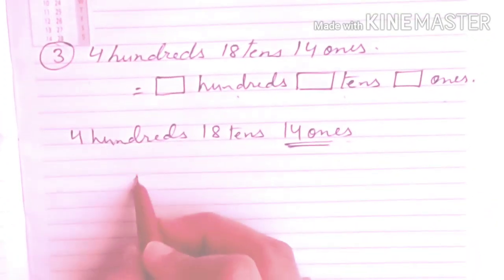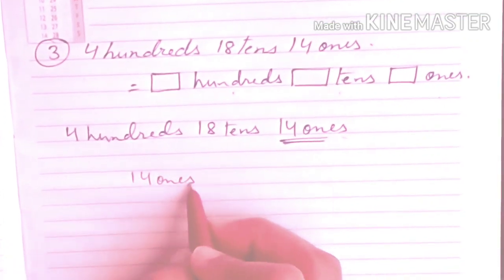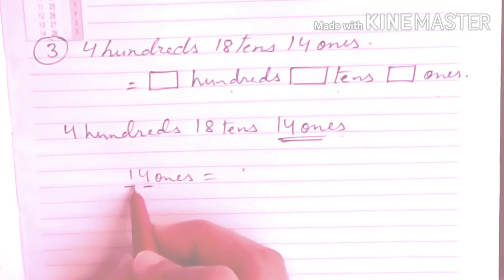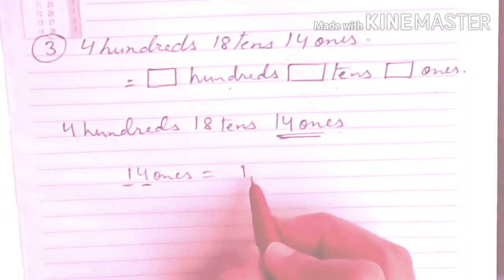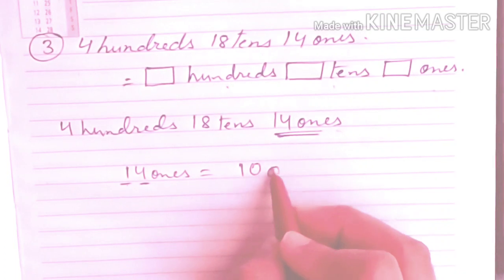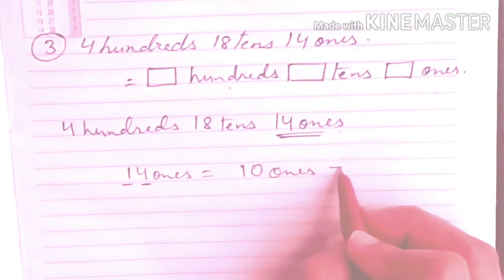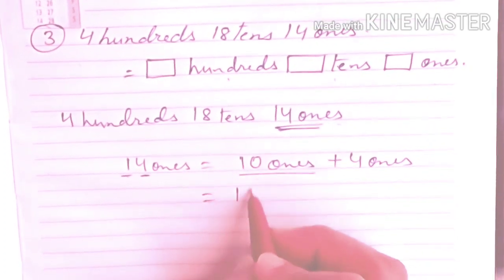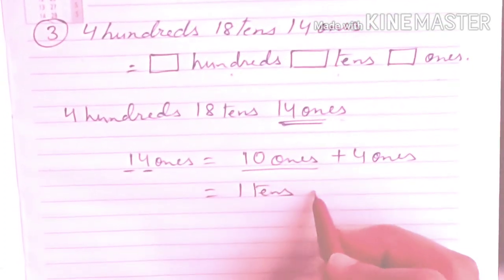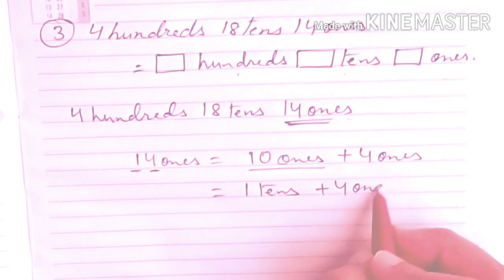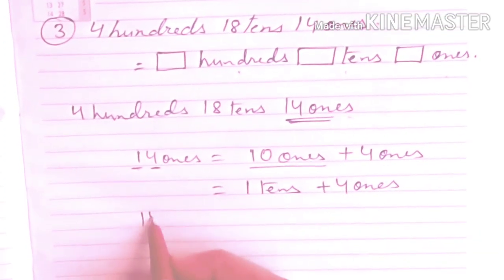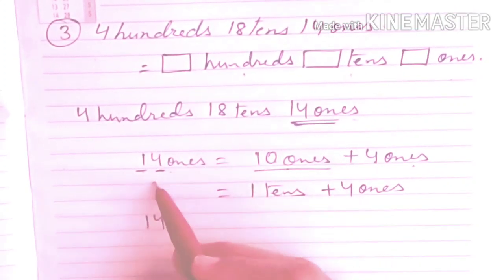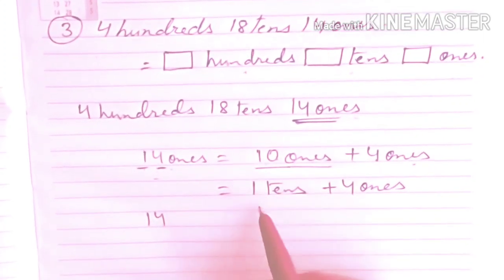14 ones. 14 ones is equals to? Here let's see. 1 ten and 4 ones. We have to write it like 10 ones plus 4 ones. And we know 10 ones is equals to what? 1 ten. 4 ones. Here are 14 ones, 10 ones plus 4 ones. 10 plus 4 gives you 14. 10 ones is 1 ten.